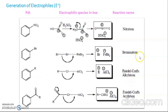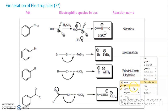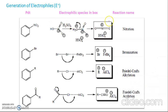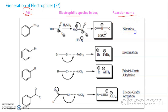For generation of electrophiles, we have different types of reactions. On the left-hand side is the final product, in the middle portion is how the electrophilic species is generating, and in the box you will find the actual electrophiles involved in the reaction. These are the corresponding names of the reactions. When it is nitration, our electrophile is NO2+ and this is the corresponding anionic part.